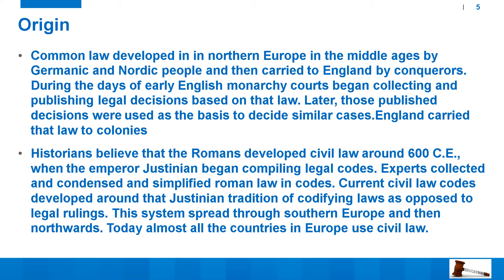As far as civil law is concerned, historians believe that Romans developed civil law around 600 CE when Emperor Justinian began compiling legal codes. Justinian was a Byzantine emperor who hired a team of experts who collected, condensed, and simplified Roman law into codes. This civil law course developed around that Justinian tradition of codifying laws, as opposed to legal rulings. It is essentially a codified law and not a judgment-based law. This system spread through Southern Europe and then northwards; today almost all the countries in Europe use civil law.